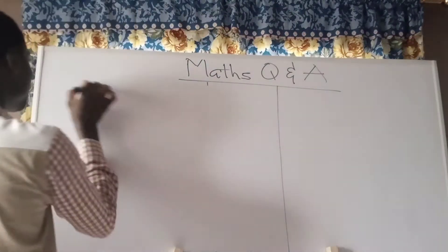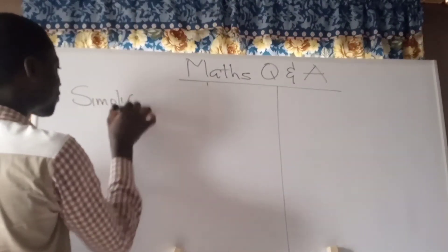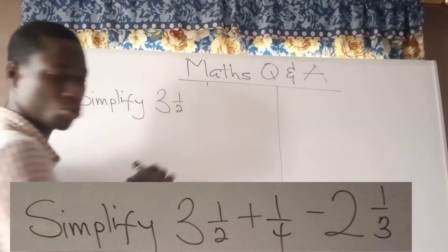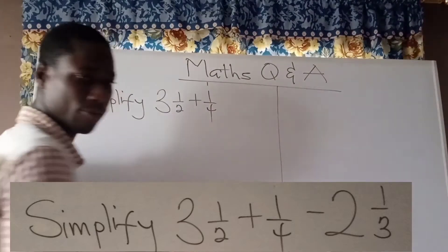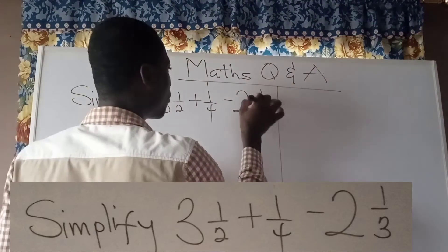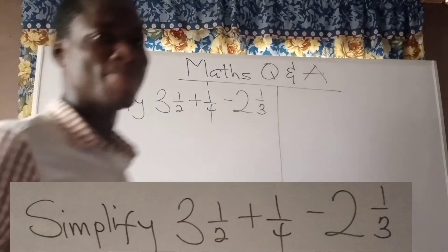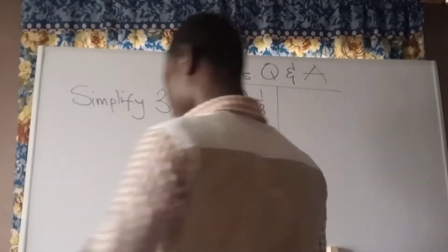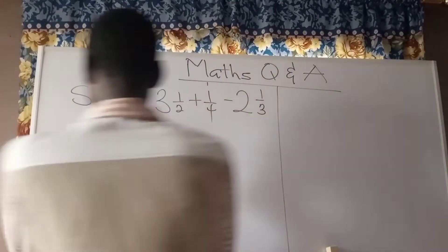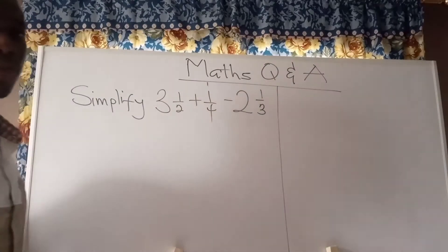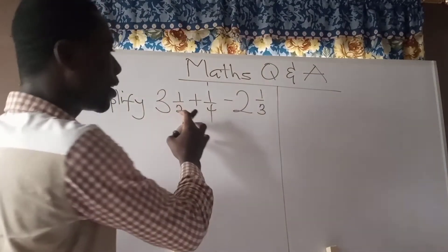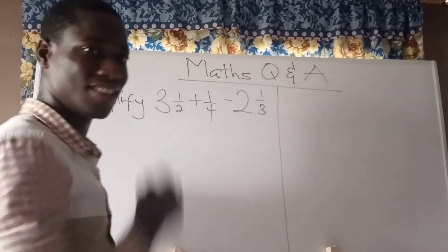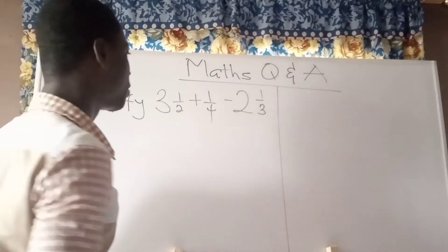Our first question is: simplify 3 whole number 1 divided by 2, plus 1 divided by 4, minus 2 whole number 1 divided by 3. This question used to bother my students, so I'm taking you through it. You can see we have mixed numbers and proper fractions all blended together, which can get confusing.